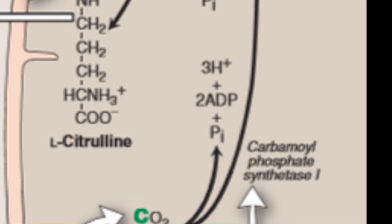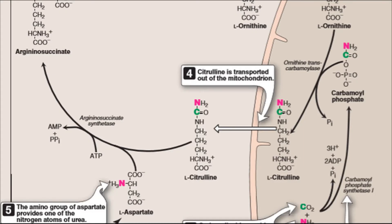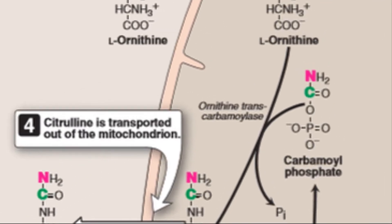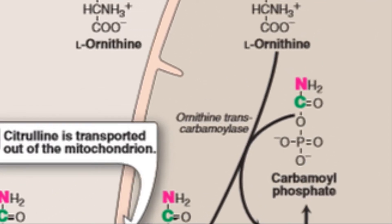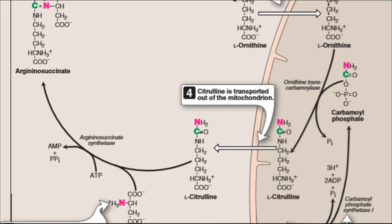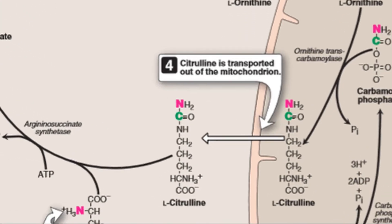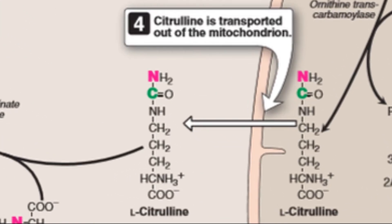The carbamoyl portion of carbamoyl phosphate is transferred to ornithine by ornithine transcarbamoylase. The reaction product is citrulline, which is transported to the cytosol. So those were the first two reactions in the mitochondria.